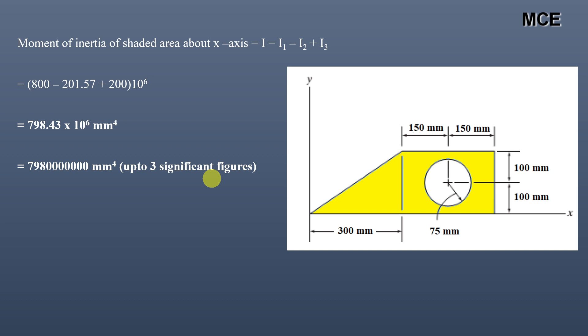This is how you can calculate the moment of inertia of any composite shape about the x-axis. Simply break the composite shape into simple geometrical figures, calculate the moment of inertia for each shape, and then add or subtract to get the moment of inertia of the composite shape. In the next problem, we will learn how to find the moment of inertia of the same composite shape about the y-axis.